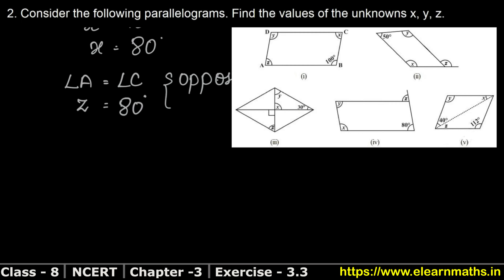Now let's do part B. This is also a parallelogram as stated in the question. Let's name this parallelogram PQRS. In parallelogram PQRS, opposite angles are equal. So interior angle Q equals angle S.